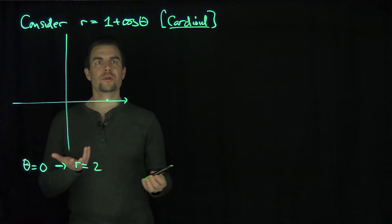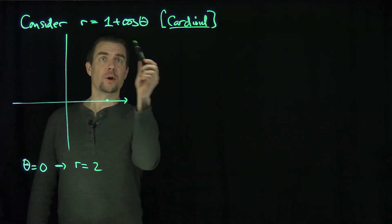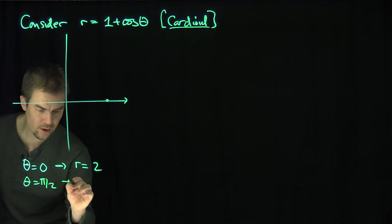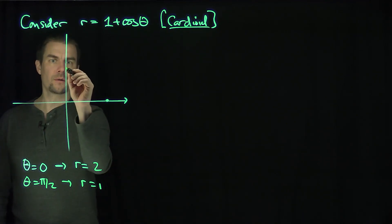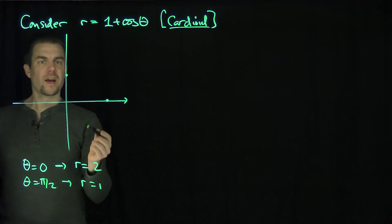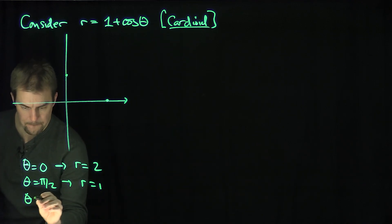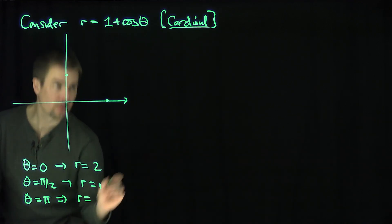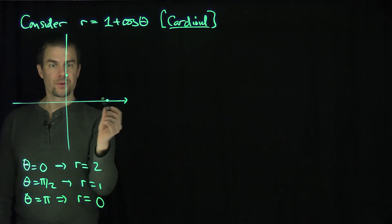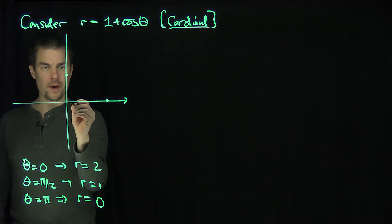When will this curve hit zero? Well, when theta is pi over two, r is equal to one plus cosine of pi over two, which equals one. So we're over here at one. And when theta is equal to pi, r is equal to one plus negative one, which is zero. So at 180 degrees, we're back at zero.